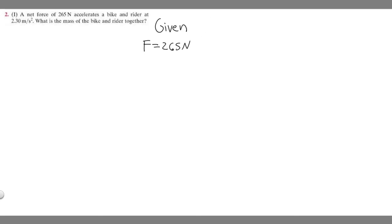And then we're also told the bike and rider go at, or their acceleration is 2.3 meters per second squared. So A equals 2.3 meters per second squared.